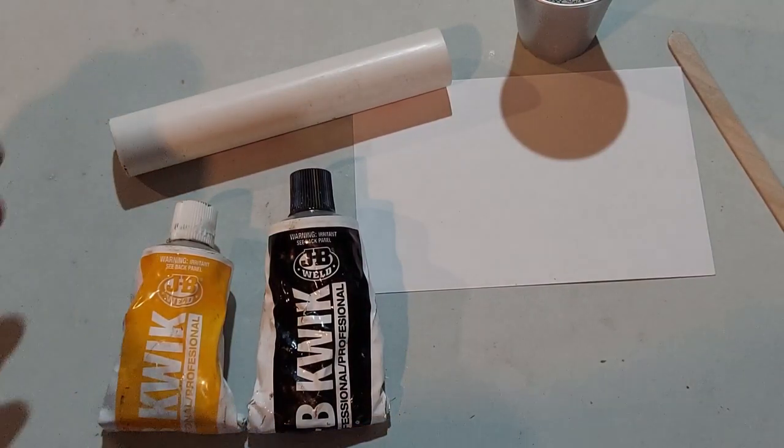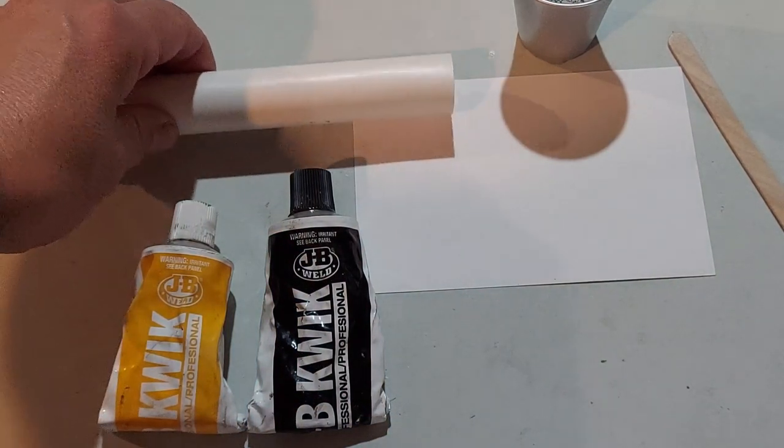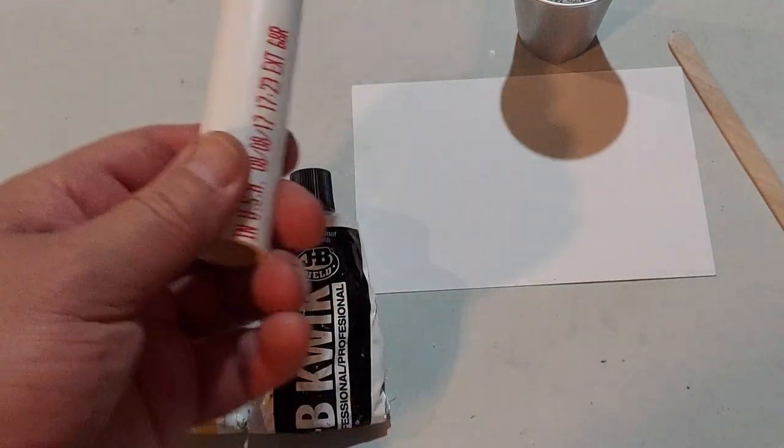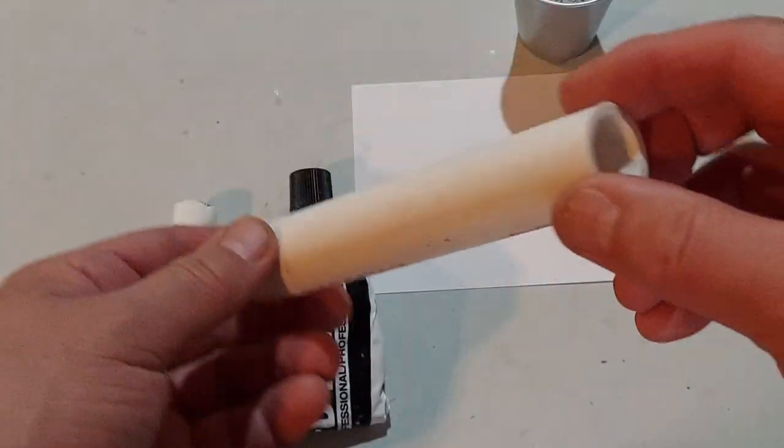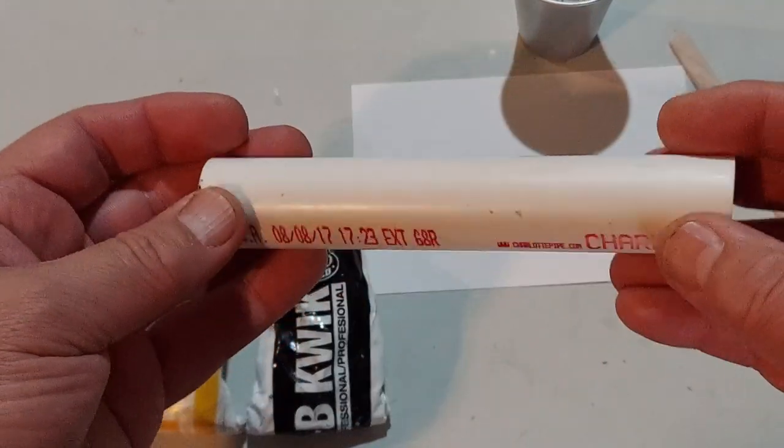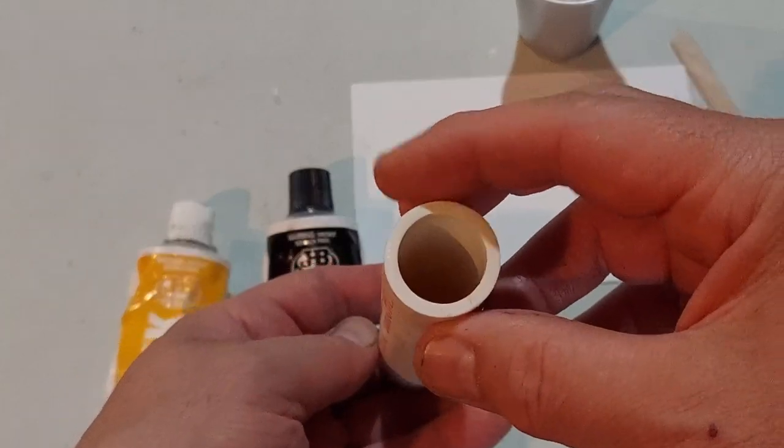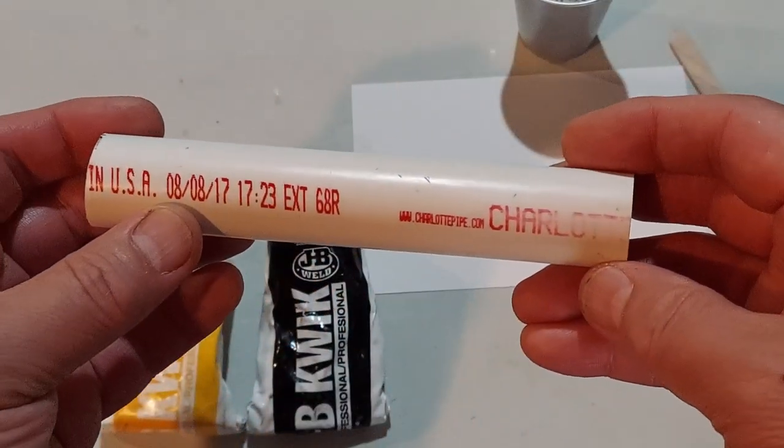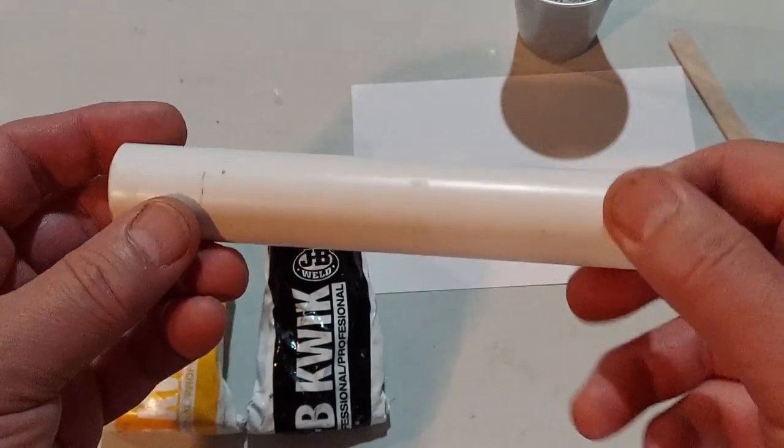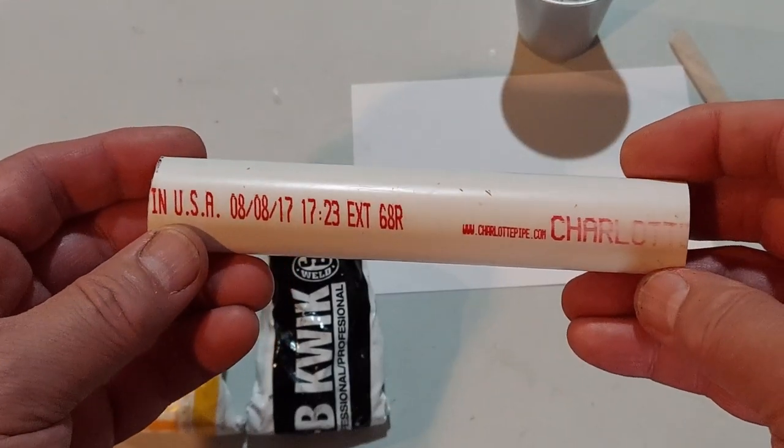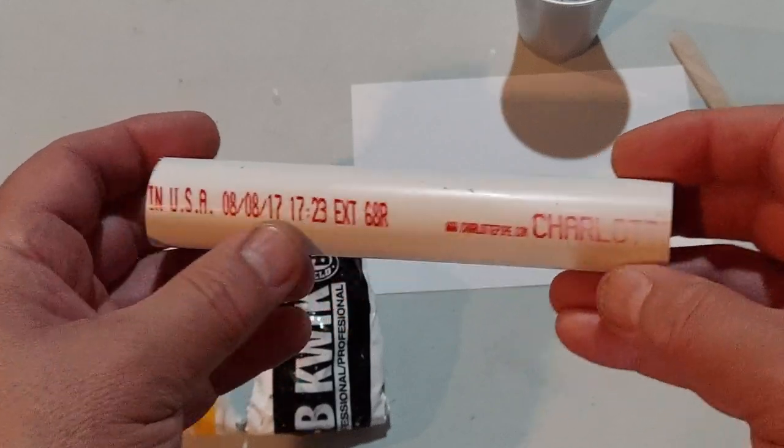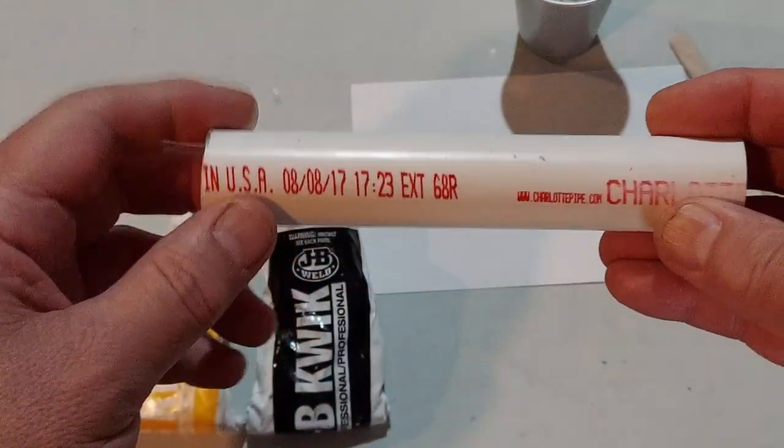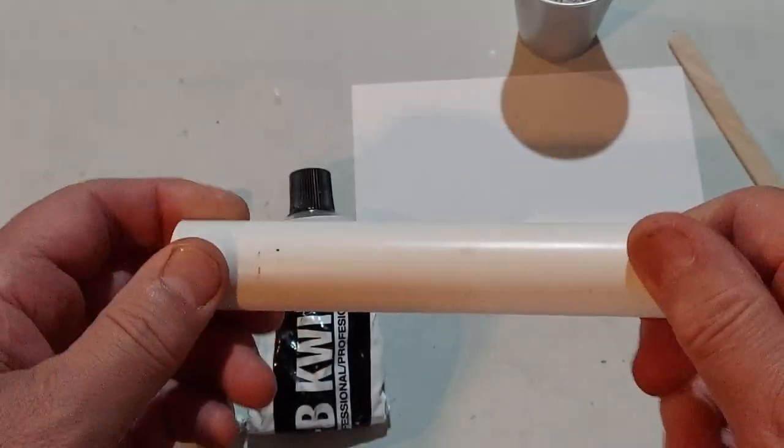Before we can melt the ingredients, we need to cap the end of what's going to be the actual engine casing. This is a six inch piece of one inch PVC, Schedule 40. It's tougher than most PVC and will handle pressure and heat better.